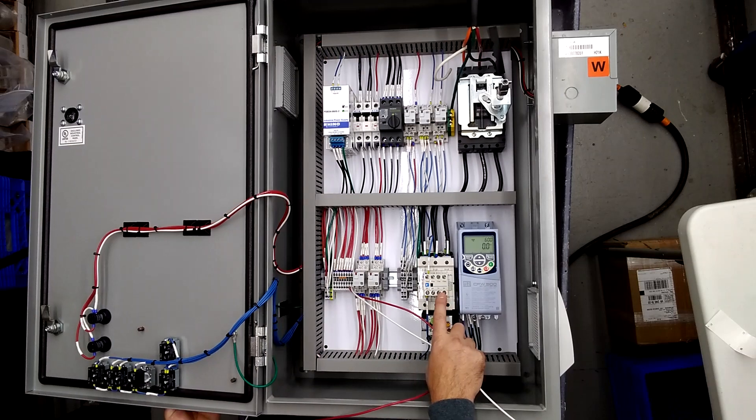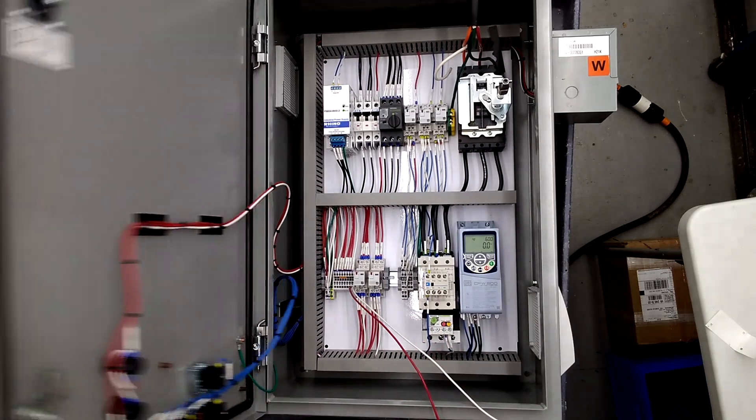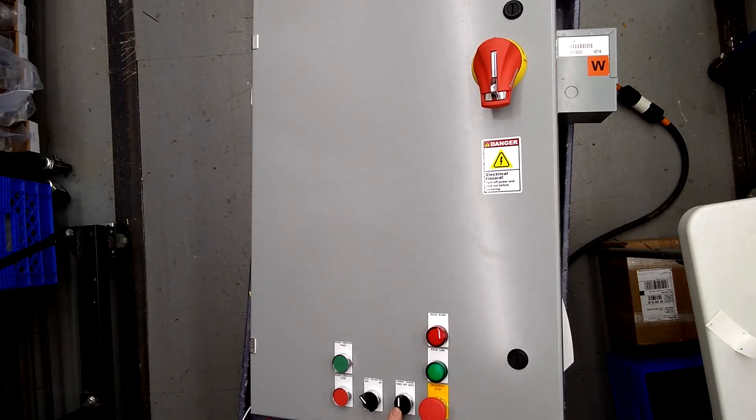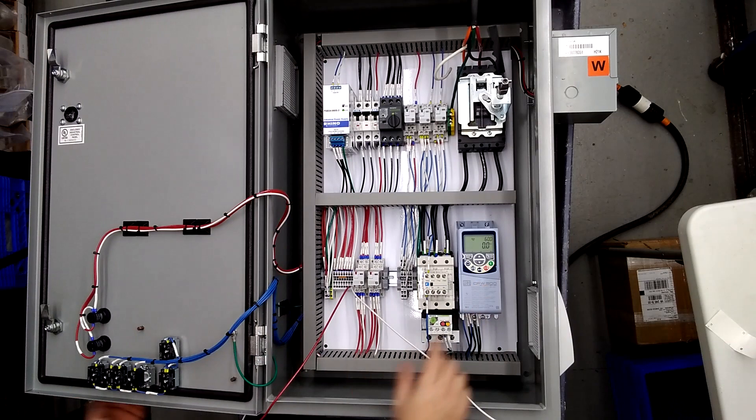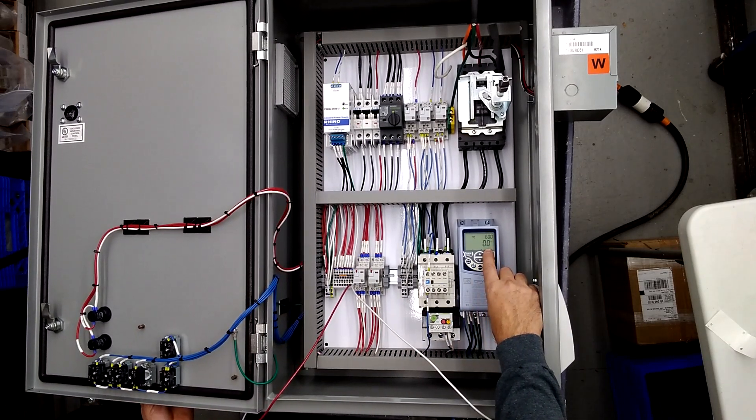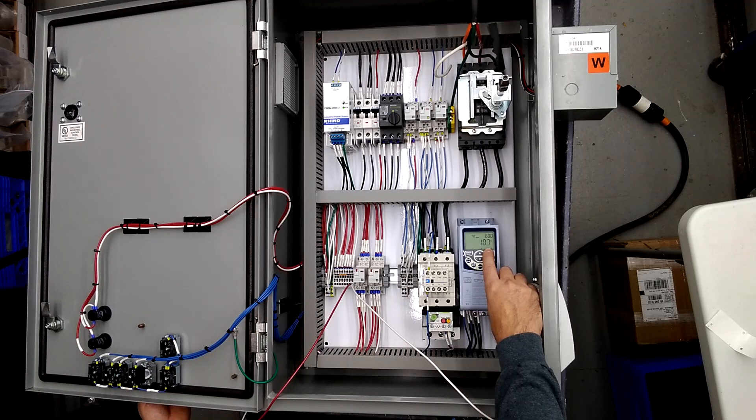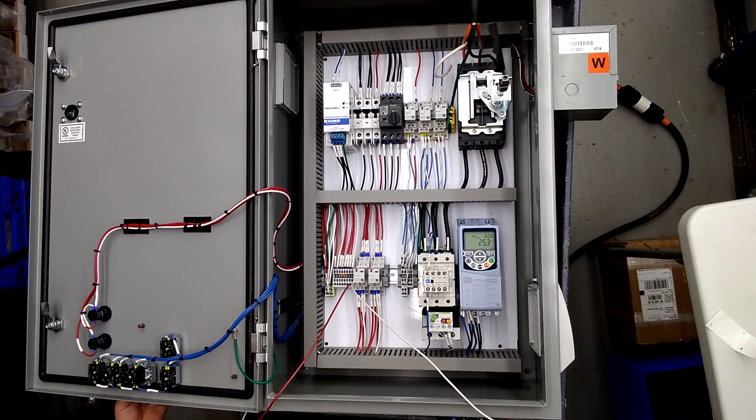And then we have a hand off auto for your cement feeder and that is the drive here. So in hand you're going to see this run up to 60. You may have to change Excel and D cell for your application. We'll turn it back off and it goes down.